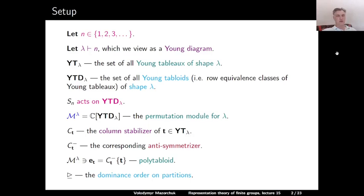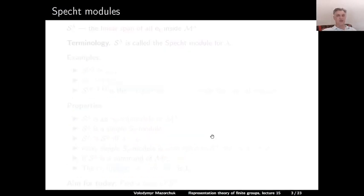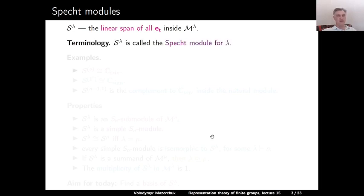On the set of all partitions, we have the so-called dominance order, which we denote by a rotated triangle symbol. Last time, we defined and studied the so-called Specht modules. We denote by S^lambda the linear span of all polytabloids E_T inside the permutation module m^lambda. The space S^lambda is called the Specht module associated with the partition lambda.